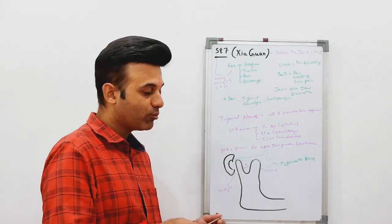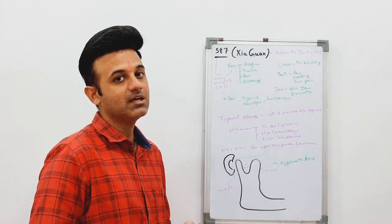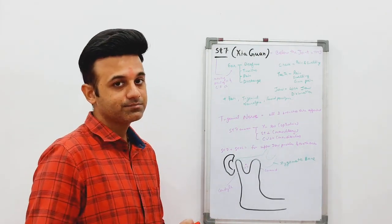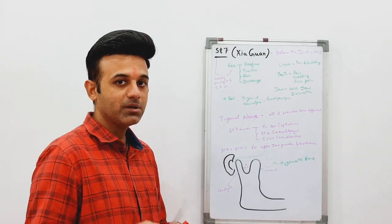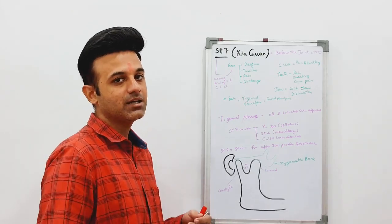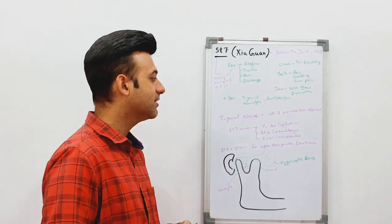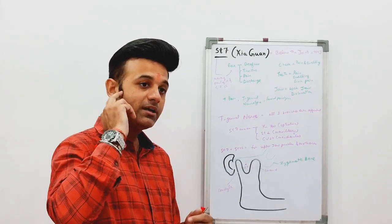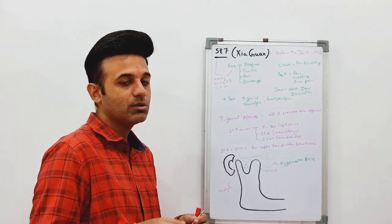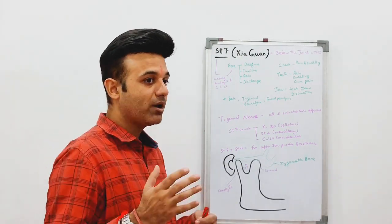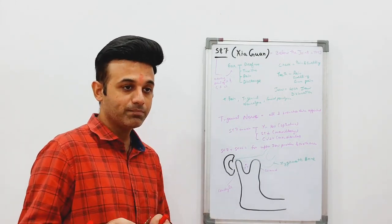Because Stomach 7 is very close to the ear, it is indicated for all kinds of ear problems as a local point. Additionally, Stomach 7 is a meeting point of the stomach and gallbladder channels, and since the gallbladder channel passes through the ear, it indirectly affects the ear. This point also lies on the cheek, so pain and swelling in this area can be treated locally. It also affects the upper jaw molars and premolars.